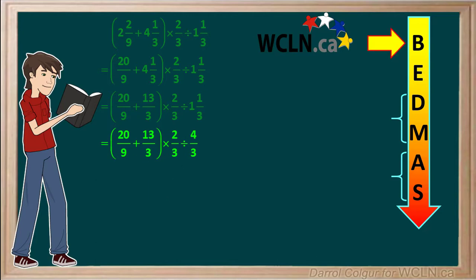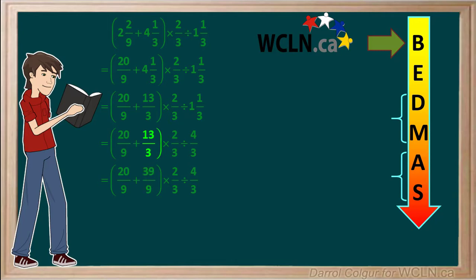Using BEDMAS, we'll start with B for brackets. Within the brackets, we have 20 over 9 plus 13 over 3. In order to add fractions, they must have a common denominator. We'll convert 13 over 3 to 39 over 9. So within the bracket, we have 20 over 9 plus 39 over 9, which adds up to give 59 over 9.